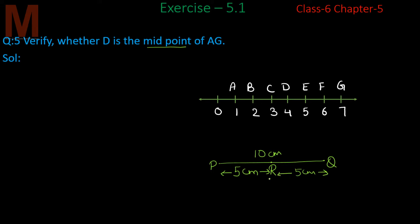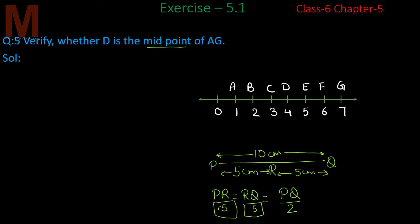The midpoint divides any length into 2 equal parts. PQ was 10 cm, which R divides into 2 equal parts, so we can write: PR = RQ, and also PR = RQ = PQ/2 = 5 cm. So the midpoint always divides any length into equal parts.